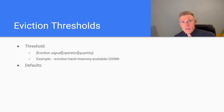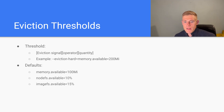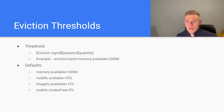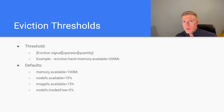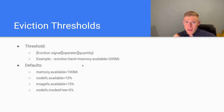The default eviction threshold values that come with Kubernetes are: memory.available less than 100 megabytes, nodefs.available less than 10%, imagefs.available less than 15%, and inodes free less than 5%. If you're in a scenario where application pods are being evicted and you're not sure why, these defaults are a potential cause — if your node only has 100 megabytes of RAM left, pods will start to be evicted.